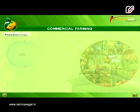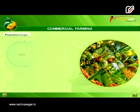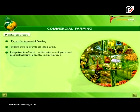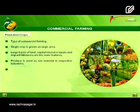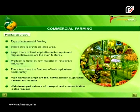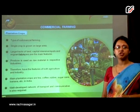Plantation farming is one of the commercial farming methods. Under this, a single crop is grown on a large area. Large tracts of land, capital-intensive inputs, and migrant laborers are the main features. Its produce is used as raw material in respective industries; therefore, it has features of both agriculture and industry. Main plantation crops in India are tea, coffee, rubber, sugarcane, banana, etc. A well-developed network of transport and communication is also required for the better functioning of this commercial farming.